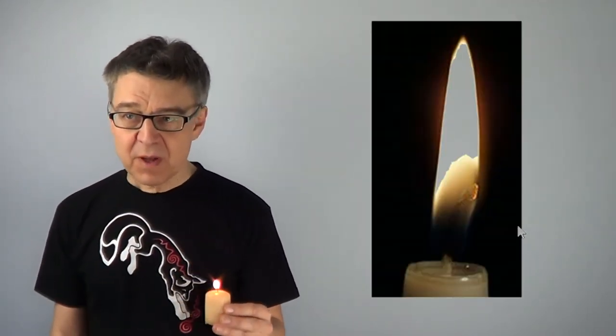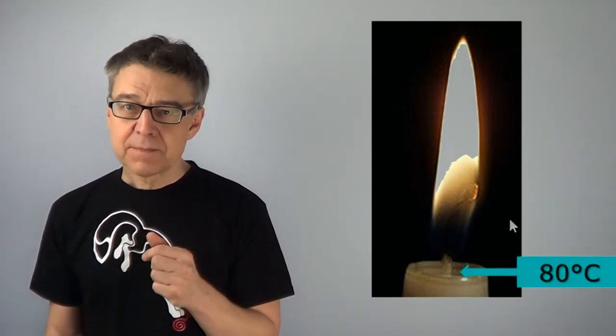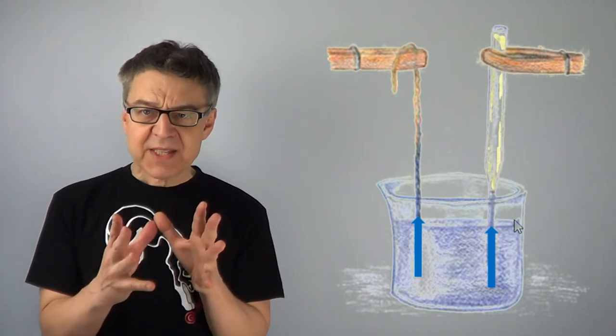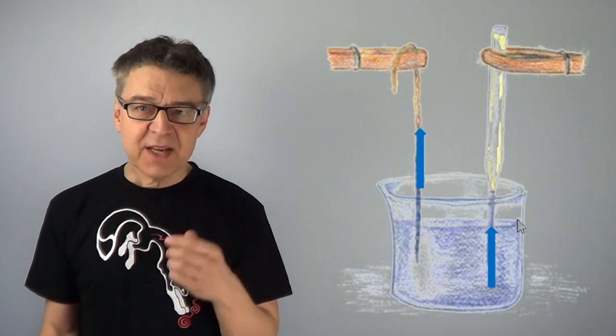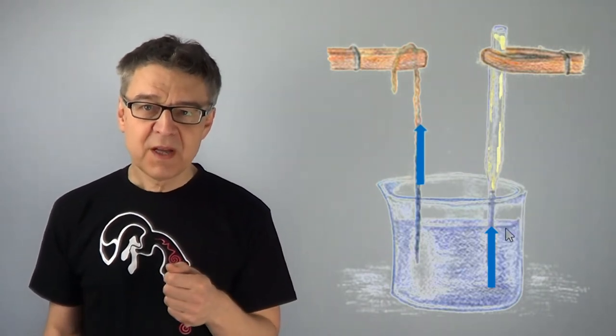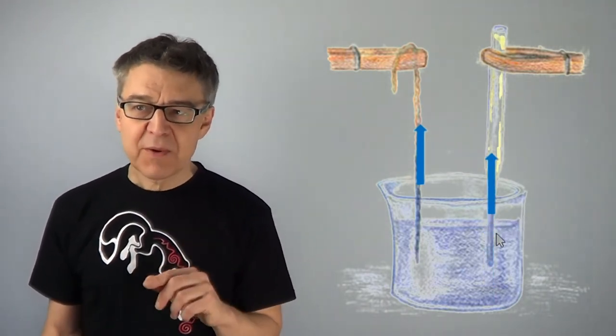For this purpose, a candle wick is required. It kind of focuses the heat of the flame. The wax melts in the vicinity of the wick. The molten wax flows up in the porous wick, like ink in chalk or blotting paper, the so-called capillary rise.